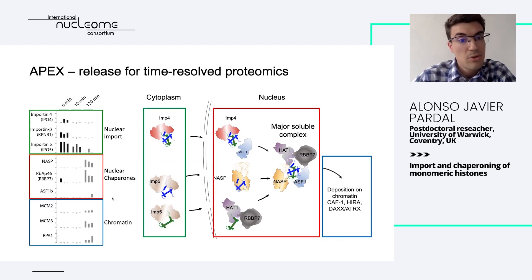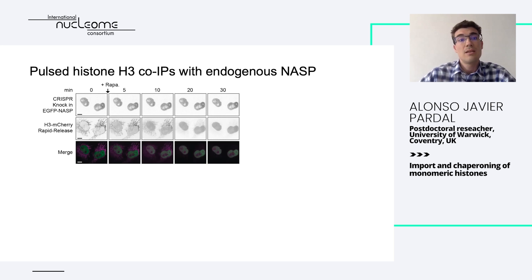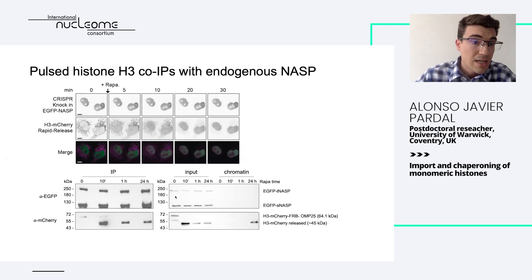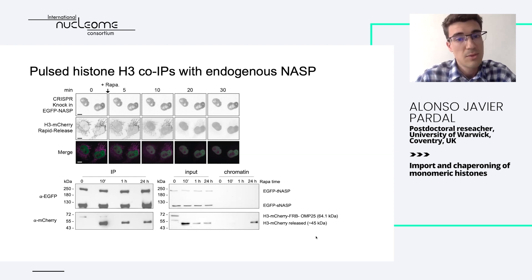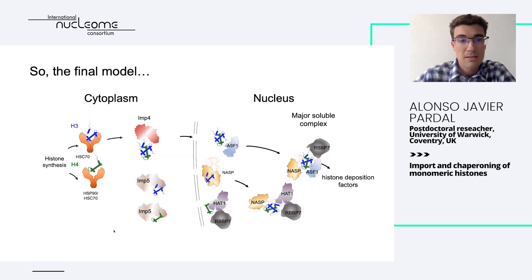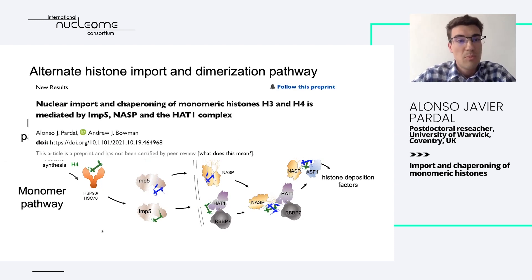We also detected the nuclear chaperones and chromatin factors from later time points. To round up the model, I'll present some results using this pulse-release system, in addition to tagging the endogenous NASP with EGFP by means of CRISPR knock-in. What we saw with pulldowns is that as soon as the histone is released from the cytoplasm, we see a very strong interaction with NASP, and as time passes and the pulse gets into the nucleus and chromatin, it wanes off from the soluble complexes and becomes associated with DNA.